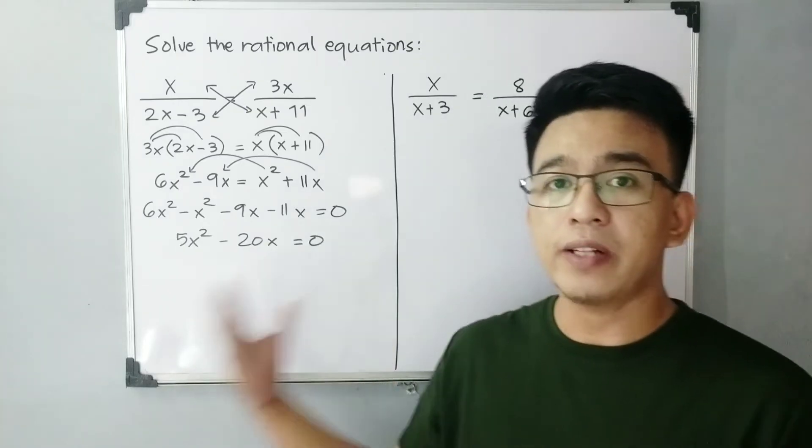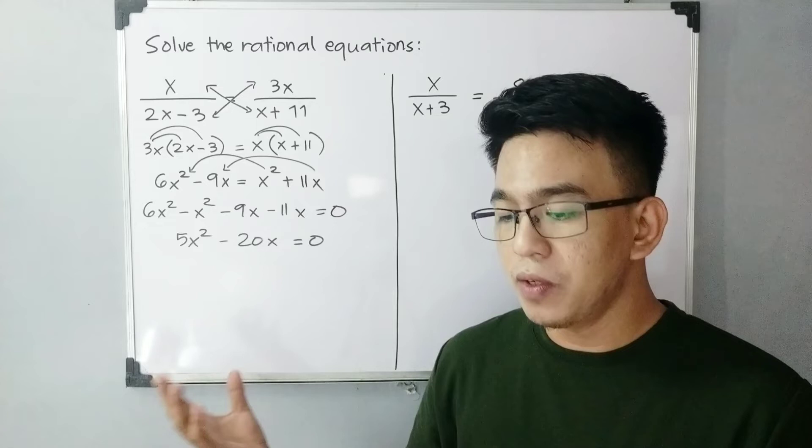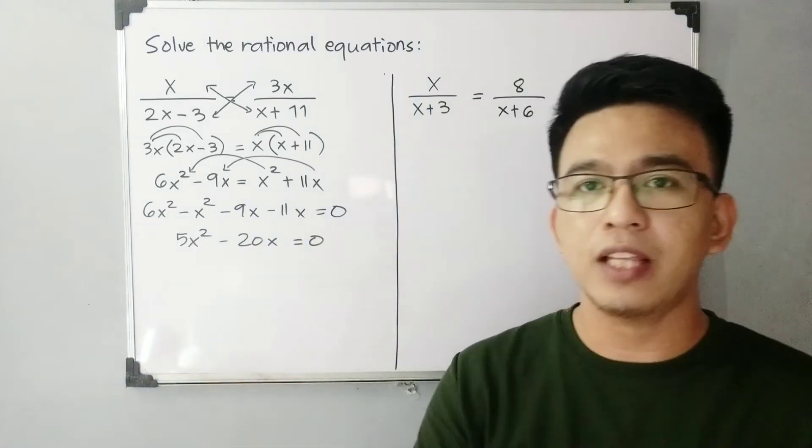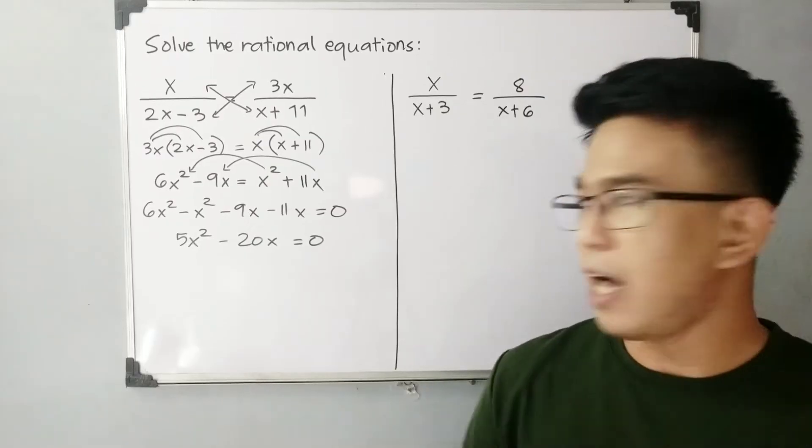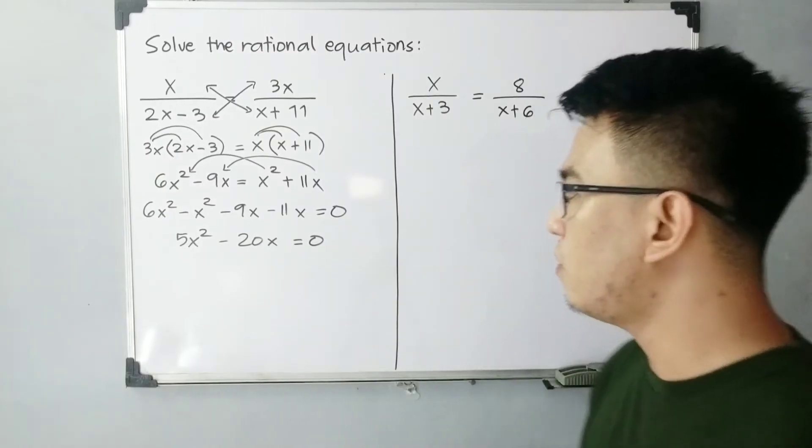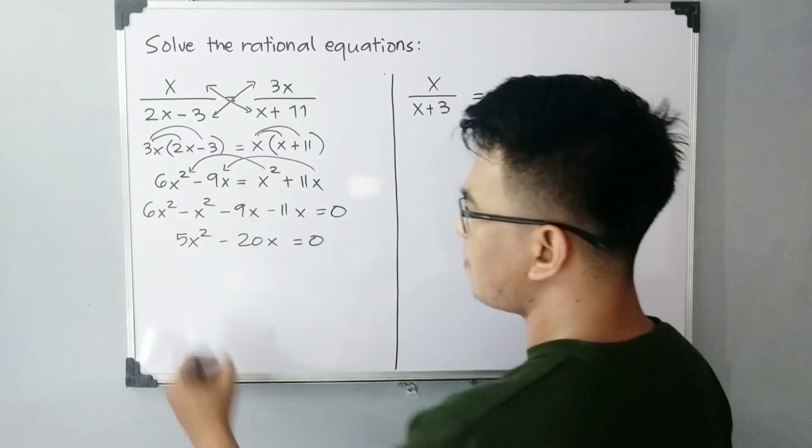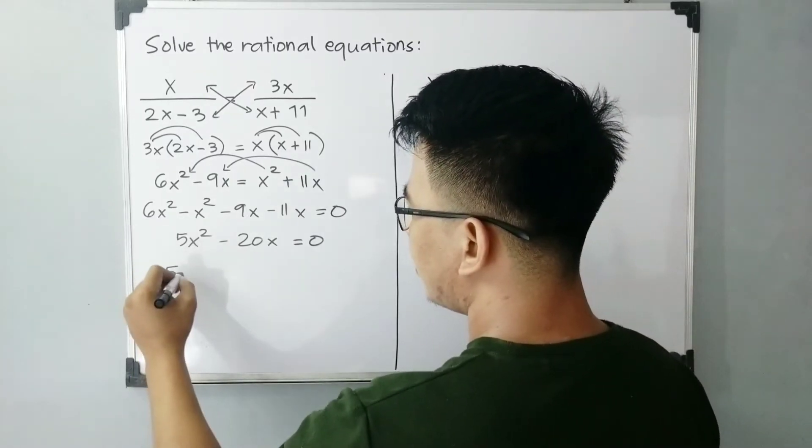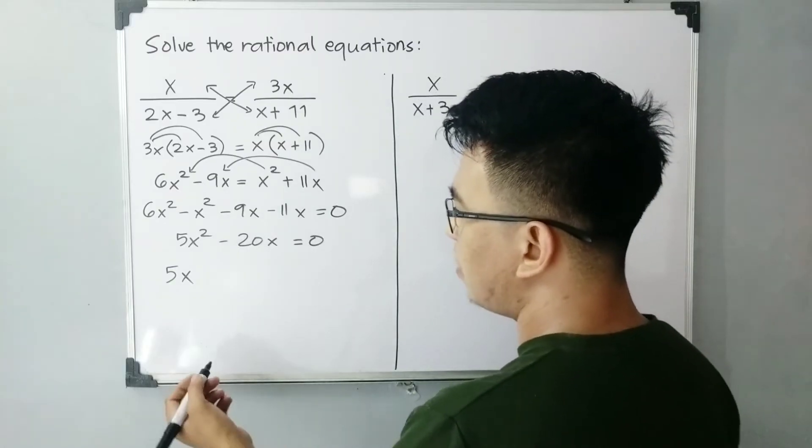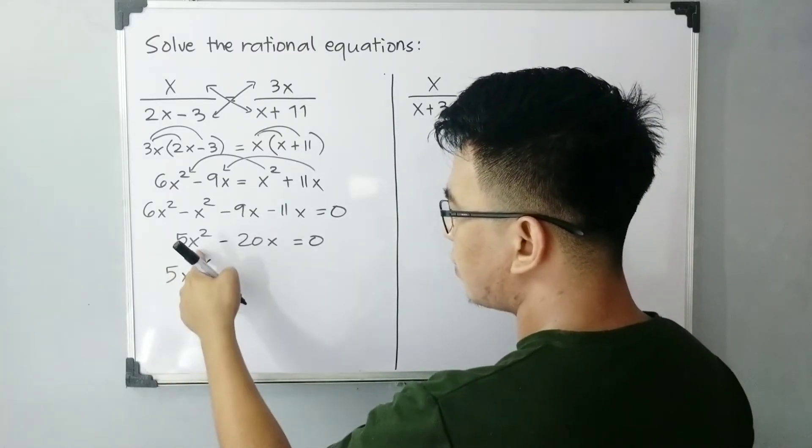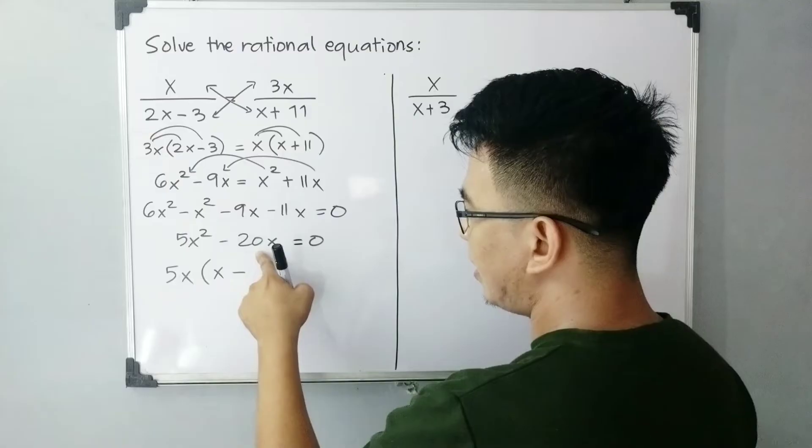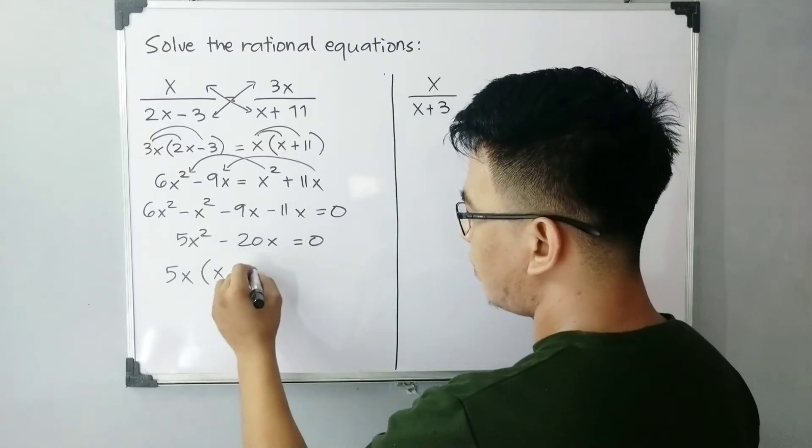So we need to figure out, our next thing to do here is we need to figure out what method we will use to solve for the variable x. So we will use common monomial factoring. So we need to put out 5x as common factor. So 5x squared divided by 5x is x minus 20x divided by 5x, that will give you 4, is equal to 0.